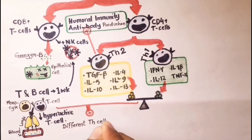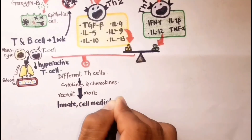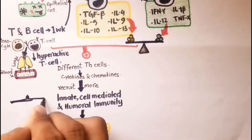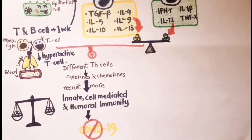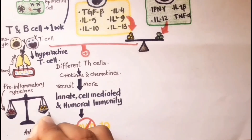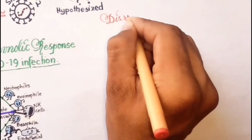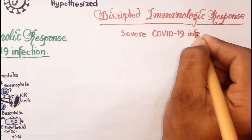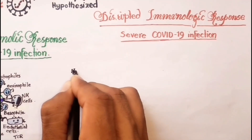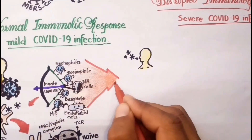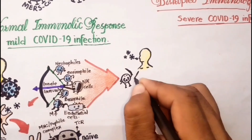Generally, activation of different T helper cells and release of sufficient cytokines and chemokines recruits more innate, cell-mediated, and humoral immunologic responses to control COVID-19 in adults. The balance between pro-inflammatory and anti-inflammatory immune responses in healthy adults allows the immune activity to shut down at the right moment. In contrast, when COVID-19 enters the body of elderly and weakened adults, pro-inflammatory immune responses become vigorous and uncontrollably active.